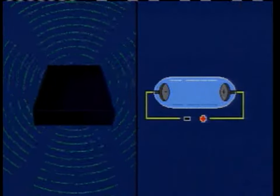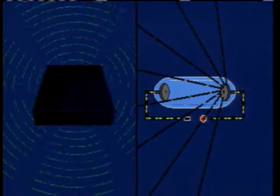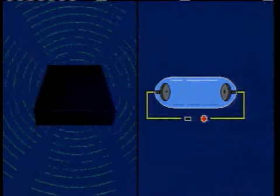These Becquerel rays were similar to x-rays in their ability to penetrate paper which was opaque to visible light. They seemed, however, to differ from x-rays because x-rays could be turned on and off, but not Becquerel rays.